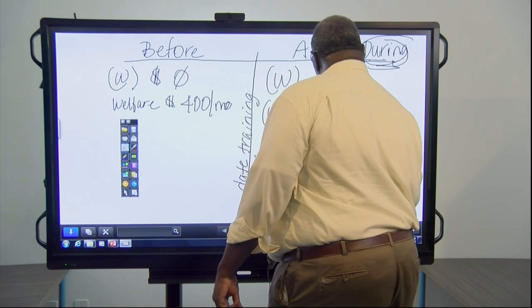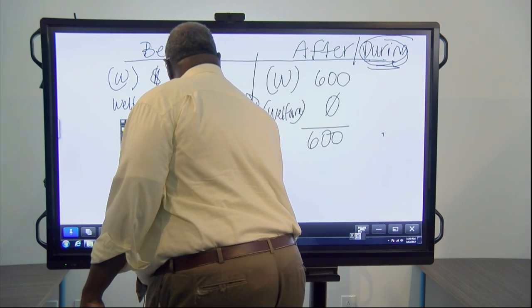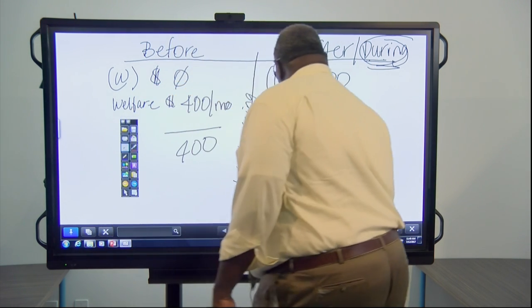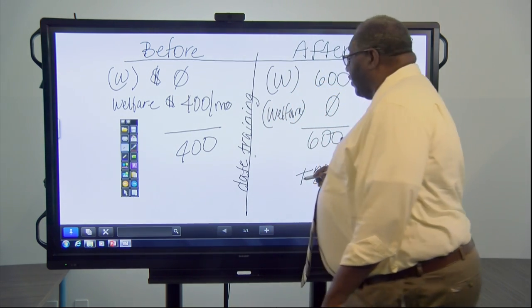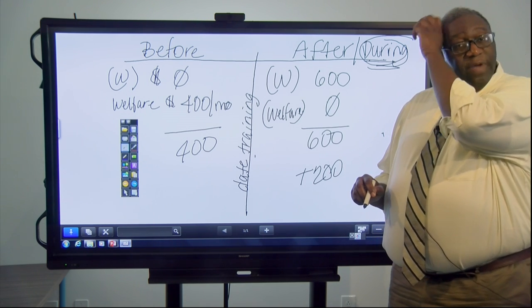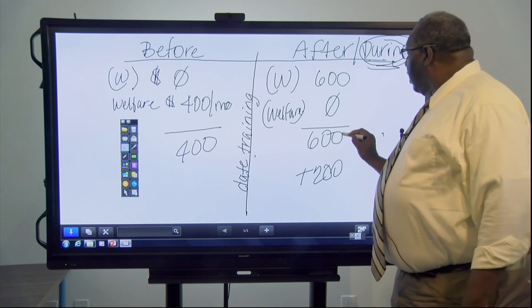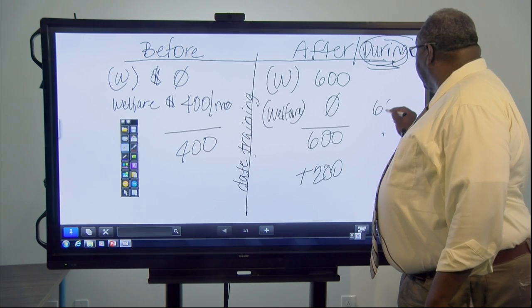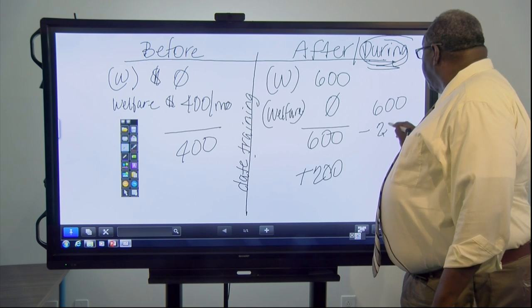So you'll notice that their income difference is positive—it's $200 a month. Now, normally we would count whatever they're making for work. But in this case, we're going to count the $600, and then we're going to go back and exclude $200.